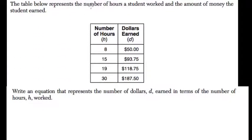The table below represents the number of hours a student worked and the amount of money they earned. Write an equation where D is the number of dollars earned and H is the amount of work.